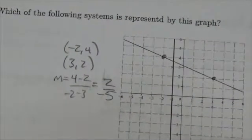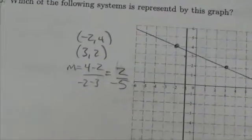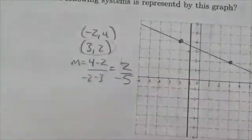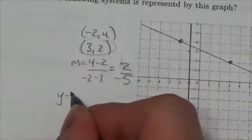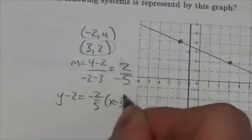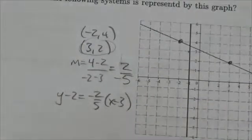Now let's put in one of the points. We'll put that equation in point-slope form. Let's choose the second point because everything's positive there, so y minus 2 equals negative 2 fifths times x minus 3.